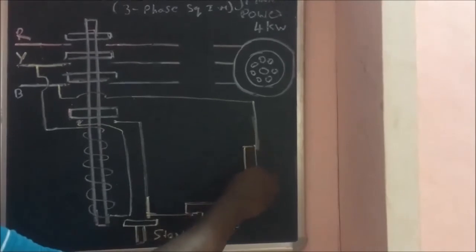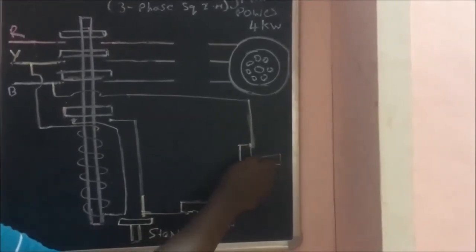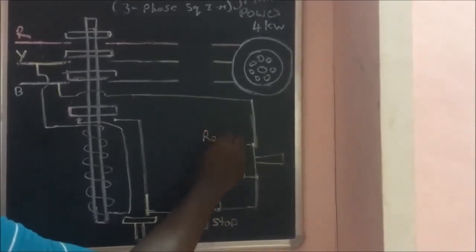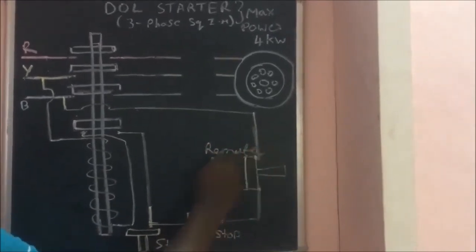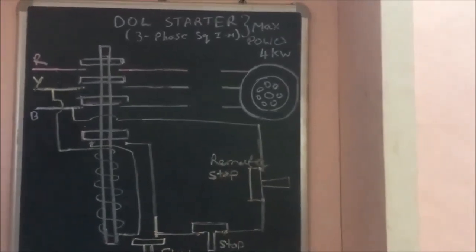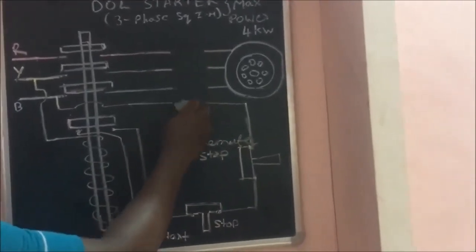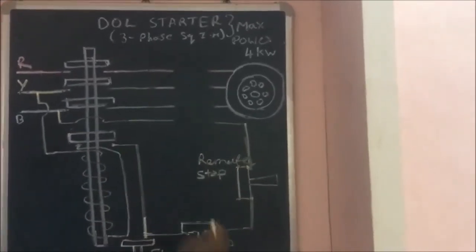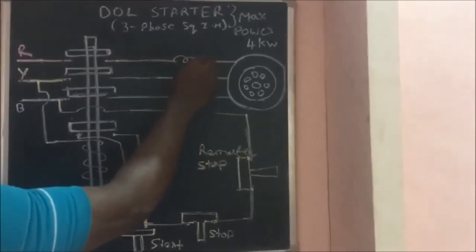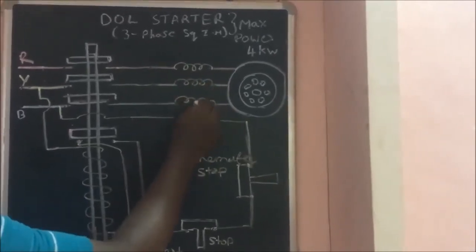Finally, switch S4 is called the overload release switch, which comes below the right side erased region. In the erased part, make a winding called the overload release coil. For each phase separately, make a winding, draw a vertical line, and connect the switch. That switch must be in the outward position.